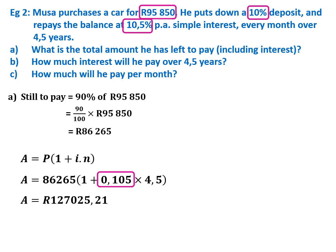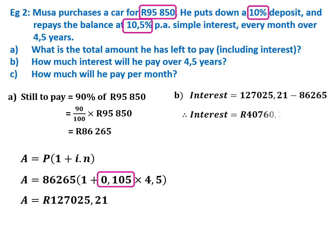Question B: how much interest will he pay over the four and a half years? Take the total amount owed after four and a half years and subtract the initial amount. That gives the total interest paid, which is a significant sum.